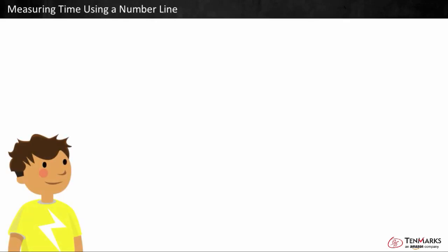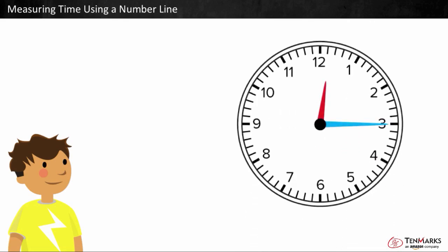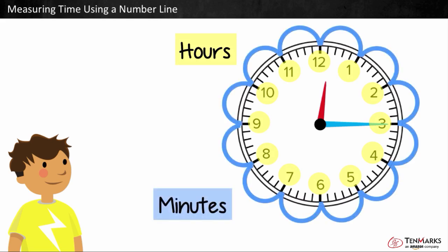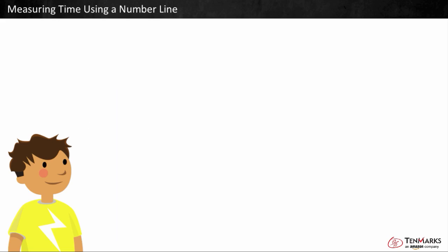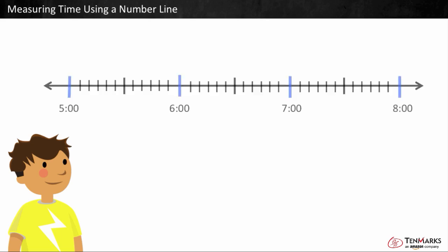You can use a number line to perform operations on time measured in hours and minutes. Let's see how. Here's an analog clock. These are the hours, and these are the minutes. It takes 60 minutes to reach one hour. So, if we make a number line that shows the hours and minutes, it could look something like this.